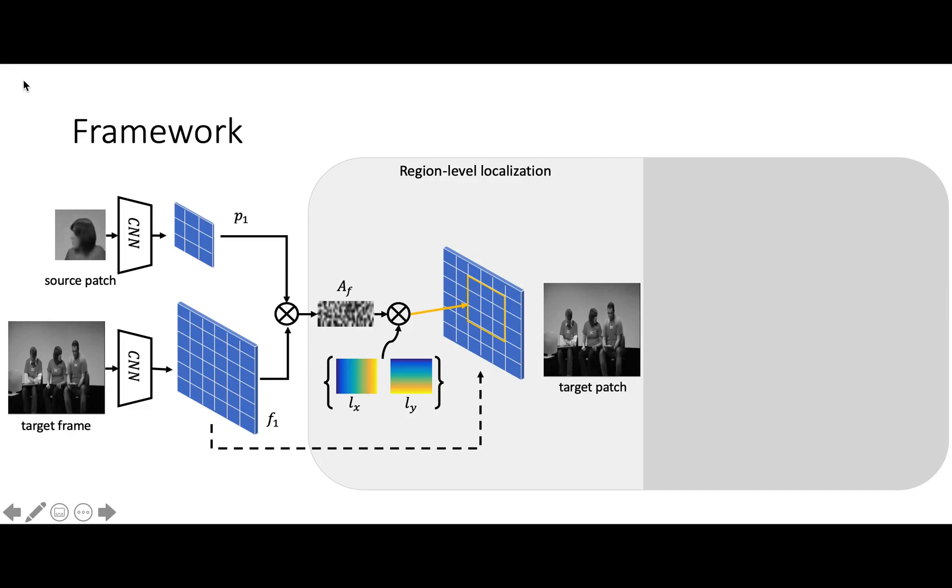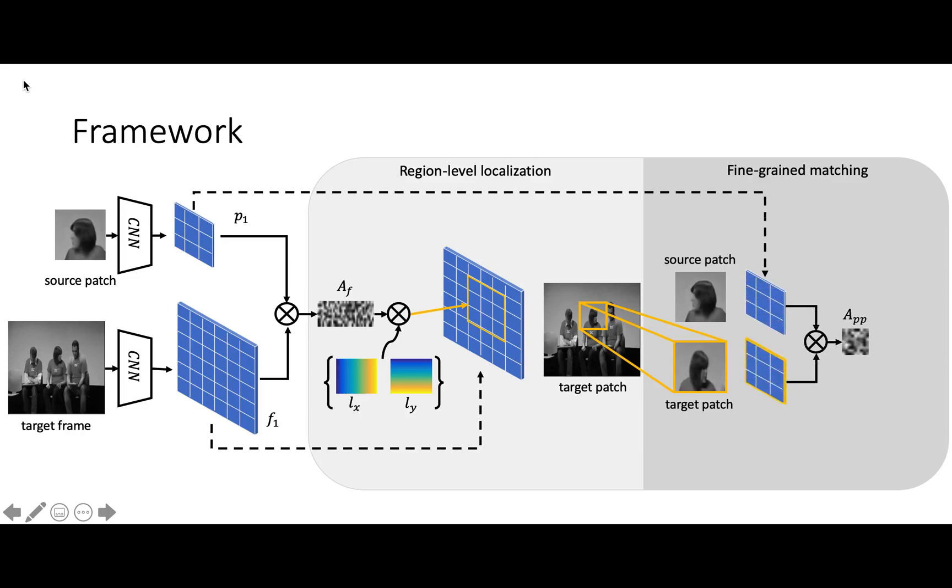At the fine-grain stage, the network learns to warp the color information from the source patch to the target patch. Since the target patch is a local region of the target frame, a sub-affinity matrix can be extracted accordingly.